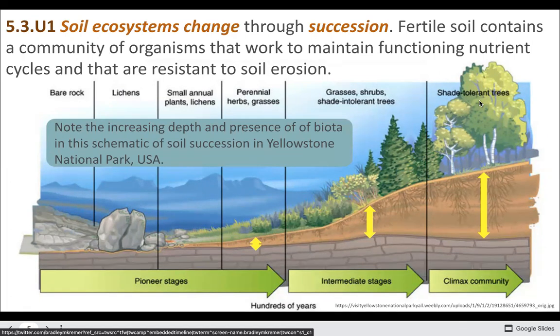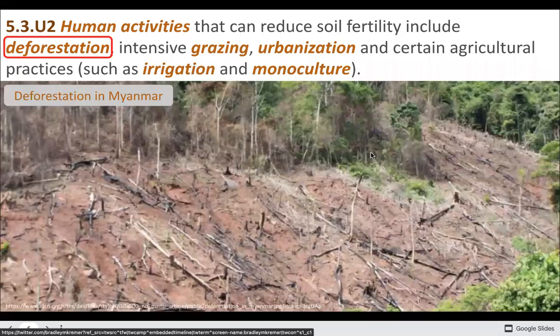A lot of these ecosystems evolved with disturbance — forest fires will happen, landslides will happen. So maybe the real climax community is one that moves between different stages of succession. That's a newer idea. Now let's talk about what we can do to mess up the soil.